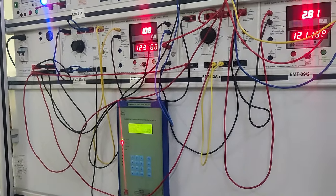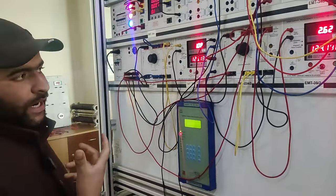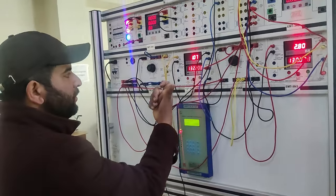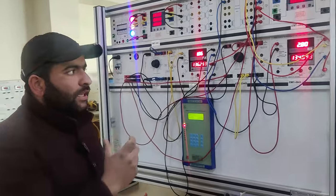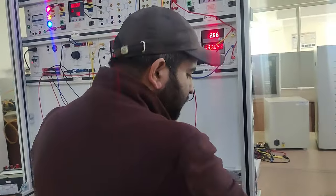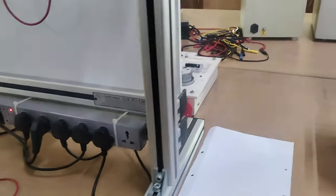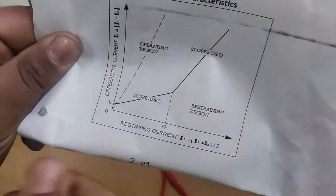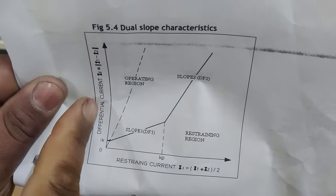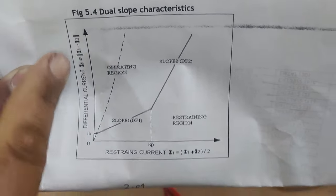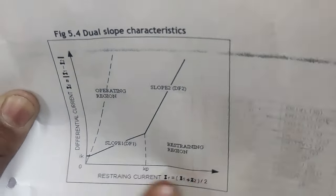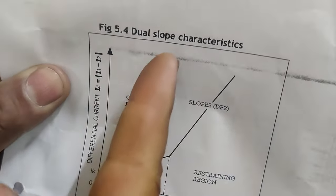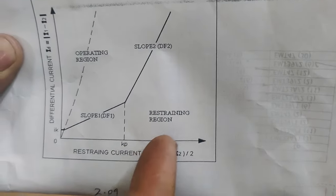We can actually change the settings as I have shown you — we can change the slope DF1, we can change slope DF2, and then we can plot the characteristics. We can plot the graph between the differential current — that's the difference of the two currents I1 minus I2 — and the restraining current, which is actually the sum of the two currents. Taking multiple readings, we can get the graph and we can get the slope — this slope DF1, this slope DF2. This region is actually the operating region, and this region is the restraining region.